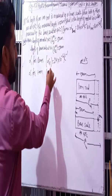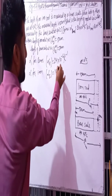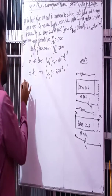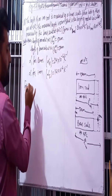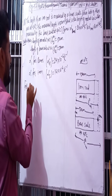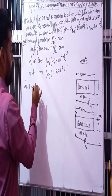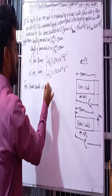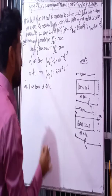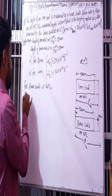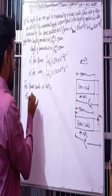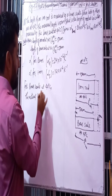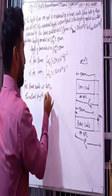Alpha iron equals 16 into 10 to the power minus 6 per Kelvin. For the brass scale at 40 degrees centigrade, the actual length of the brass scale.